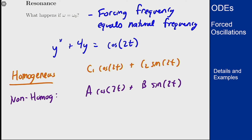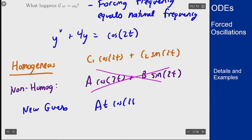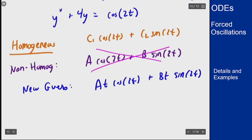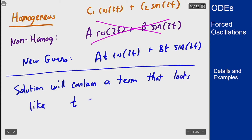So how do we fix it? We fix it by multiplying by t. We can't use our original guess, so our new guess is going to be At·cos(2t) + Bt·sin(2t). When we solve this out we will get something for these coefficients, which means that our solution will contain a term that looks like t·sin(2t).